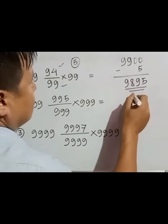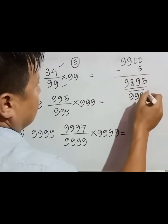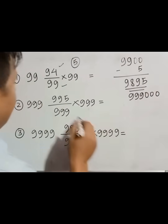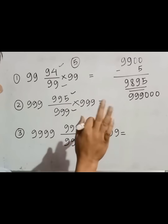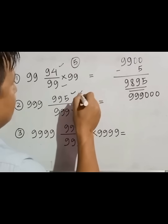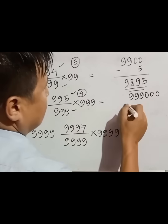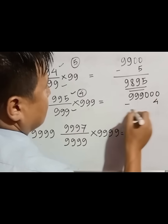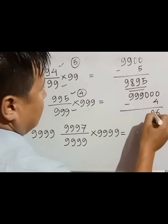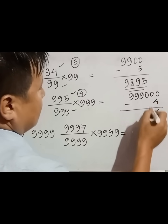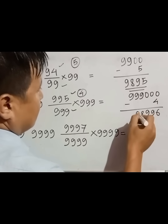Similarly, in question number two there are three nines. We write three nines and three zeros since there are three nines. The difference of these two numbers, 995 and 999, is only 4. Therefore we have to subtract 4 from this number to get the final answer — it is 6, 9, 9, 8, and 9.